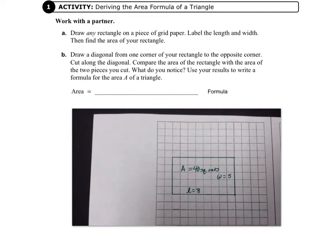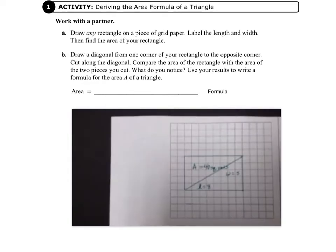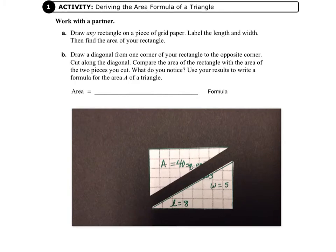First, you see the diagonal that I've drawn, and this is what it looks like when I've cut it into two pieces. Our next direction is to notice what's going on here and to use our results to write a formula for the area, A, of a triangle. So, let's look at it carefully.